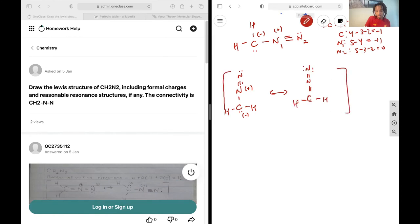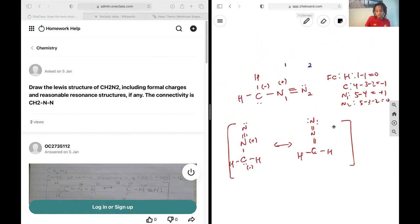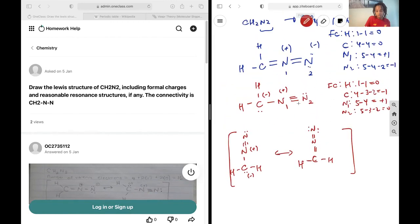These two, and on this one the charge. There we go. So those are our two resonance structures, and that's it.